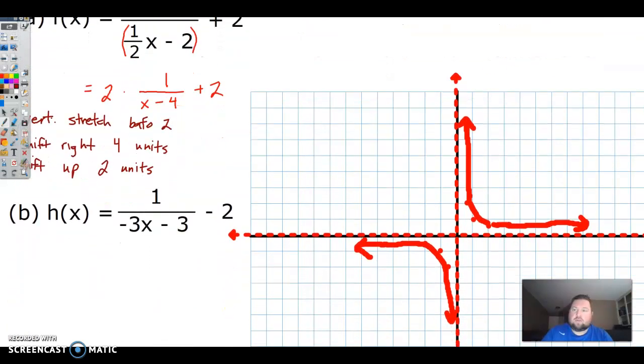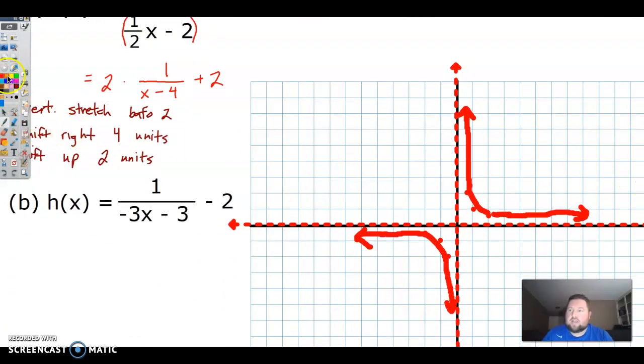I have my parent function graphed already, and now I just need to perform these tasks. Do your stretching or compressing first, because you multiply before you add or subtract. So if we multiply by two, that's going to become two right there, and that's going to become four, and it's going to become one. And then negative four, negative two, negative one. I'm not going to draw it in yet, because I still need to do my shifting as well.